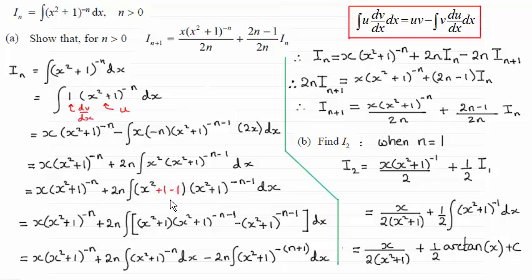So, that means that I can expand out. Now I can do (x² + 1) times (x² + 1)^(-n-1), as you can see here. And then we've got -1 here, multiplied by (x² + 1)^(-n-1). That's that term there.